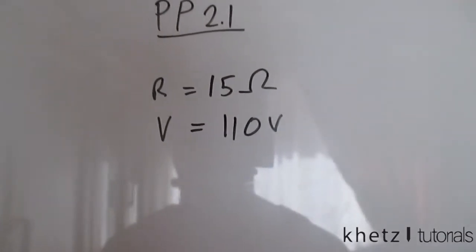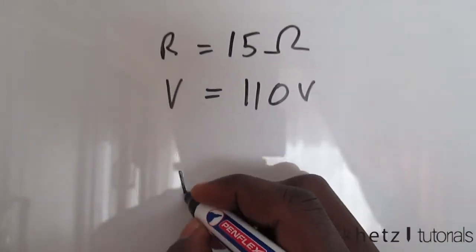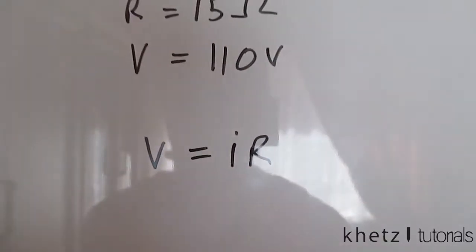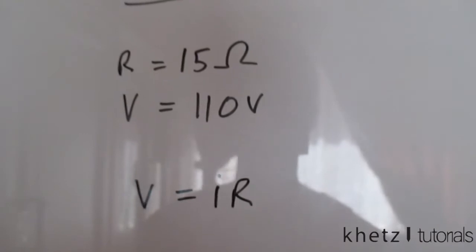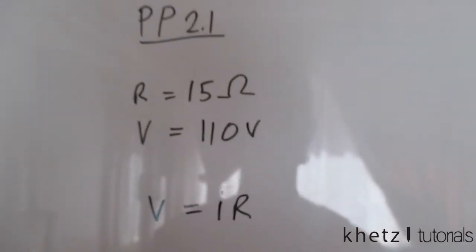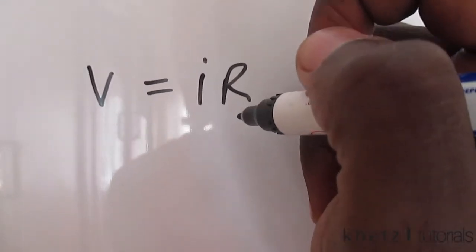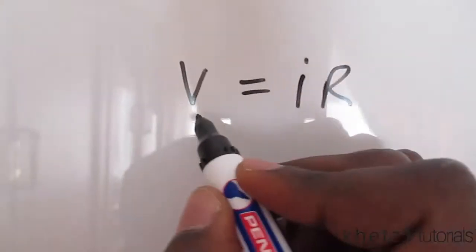From Ohm's Law, we know that V equals IR. The question is looking for the current drawn by the toaster, so we can rearrange this formula by dividing both sides by R.